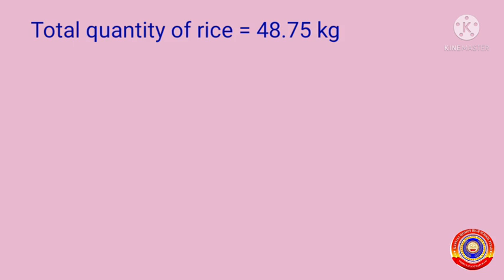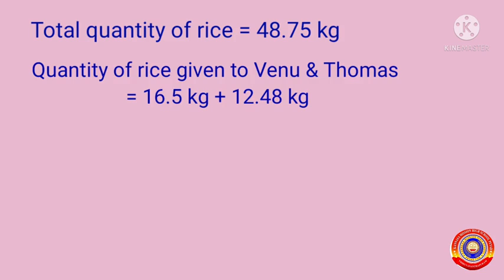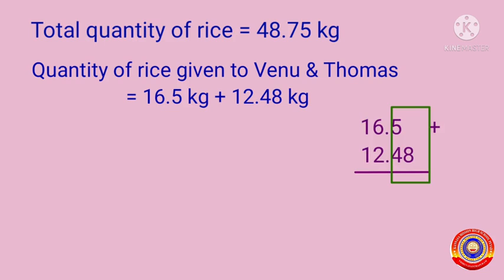Total quantity of rice is equal to 48.75 kilograms. Quantity of rice given to Reno and Thomas is 16.5 kilograms plus 12.48 kilograms. There is one decimal place in 16.5 and two decimal places in 12.48. Before adding these numbers we have to make the number of decimal places the same — add a zero after the tenth place so 16.5 becomes 16.50.